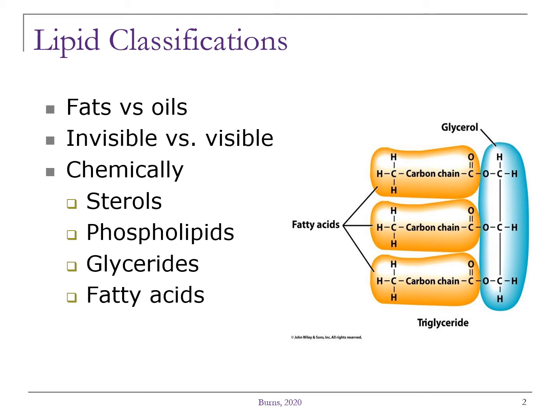The fat that is present naturally in food is also referred to as invisible fats. Examples of this would be the milk fat found in dairy products, the fat found in poultry, and the marbling that's present in meat products. Visible fats on the other hand are those such as the fats found in butter, shortening, cooking oil, and margarine.